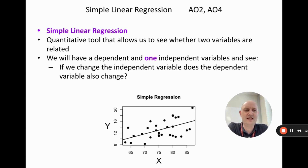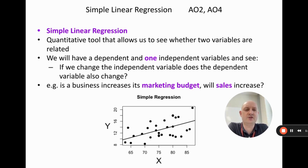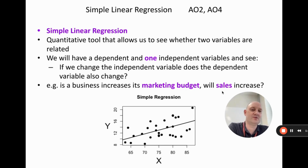This might not make a lot of sense yet, so we're going to do lots of examples. To give you one example: if a business increases its marketing budget, will sales increase? We would expect yes — if the marketing budget goes up, then sales will increase. Here the independent variable is the marketing budget and the dependent variable is sales, because sales change based on the marketing budget.